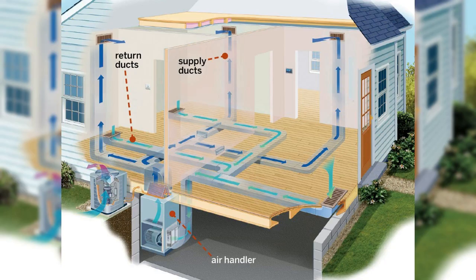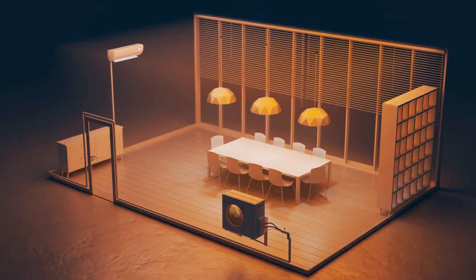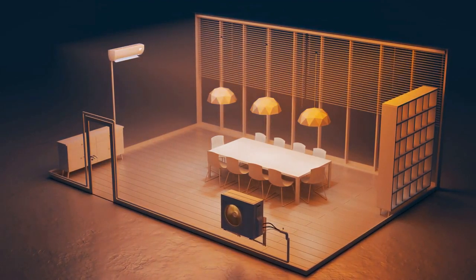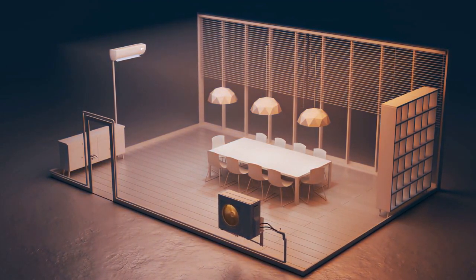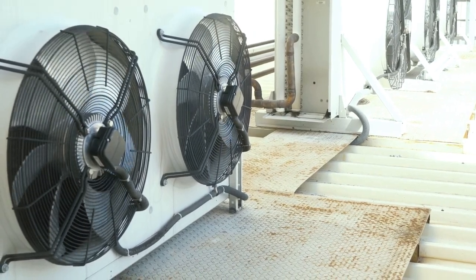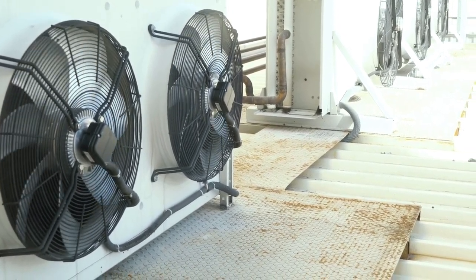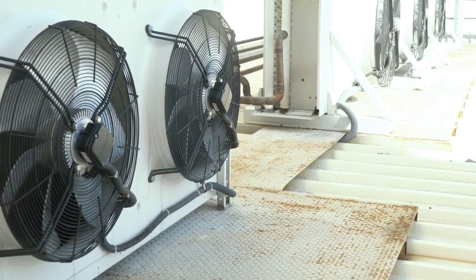Split system design. A split system air conditioner is comprised of two separate units, one located outside and one located inside the house. The outdoor unit houses the condenser and compressor, while the indoor unit houses the evaporator. This design is ideal for larger buildings and homes with multiple rooms, as it provides maximum cooling power and flexibility.